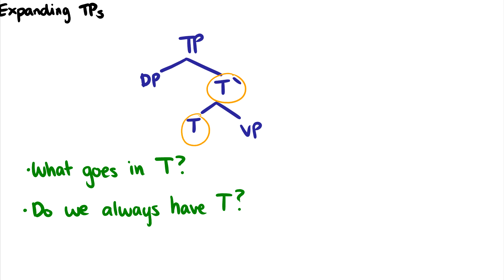So there are some questions that we have now. What goes in T? Well it's a tense phrase, so perhaps it is tense that goes in there. Do we always have T? Do we always have tense in our sentences? And when we don't have past, present, or future tense, what else can we put in there?